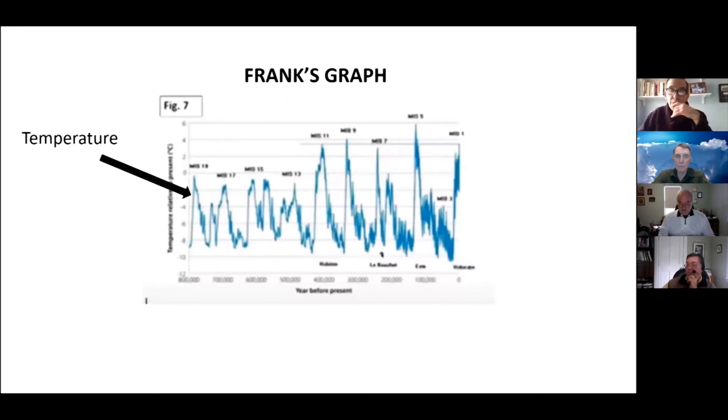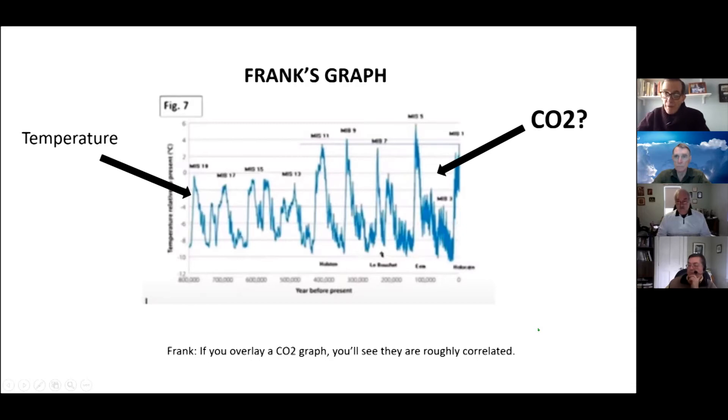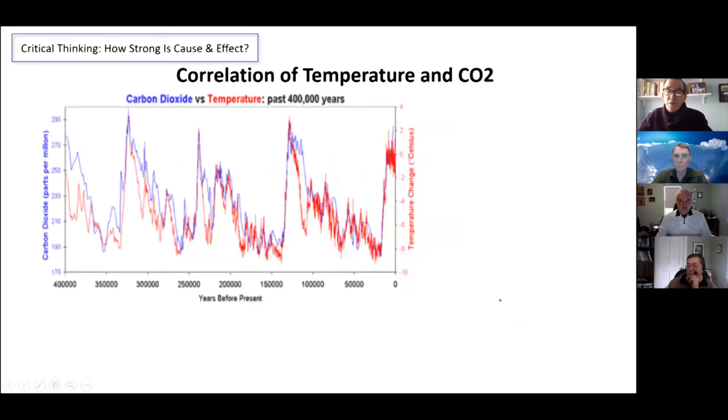So if we go back to Frank's graph, he says the temperature is going up and down a lot. The question is, is CO2 related to that? And Frank had said in his talk, if you overlay a CO2 graph, you'll see they're roughly correlated. Well, I decided to do that. And it turns out that's an understatement. They are completely correlated. If you see here, the red is the temperature and the blue is CO2. When one goes up, the other one goes up. So should I stop right here in the middle? You can finish for Frank to bring in his points of view. I'll stop sharing, Frank, so you can.